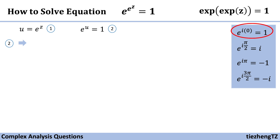We use the identity e^(i·0) = 1, so u = 0 + 2kπi, because there is a period of 2kπ. We can write this as u = 2kπi.